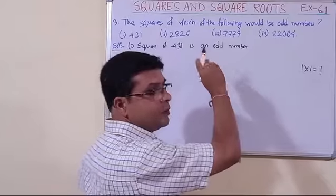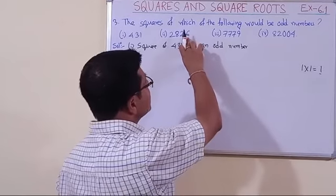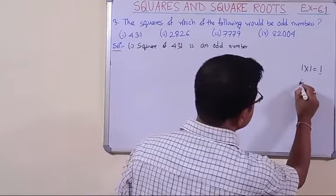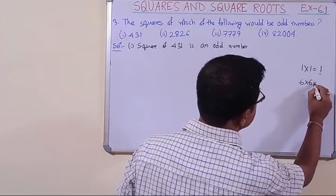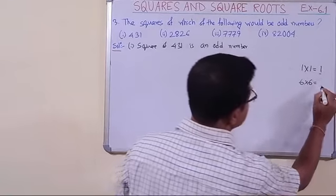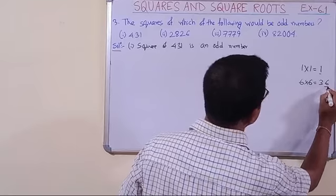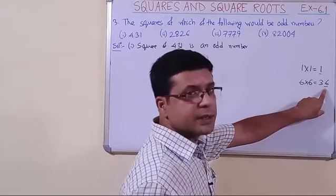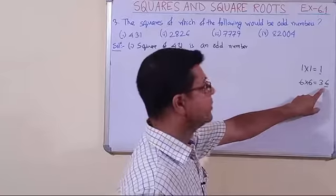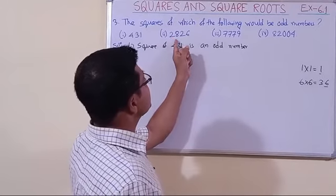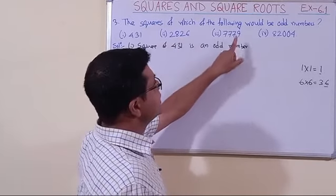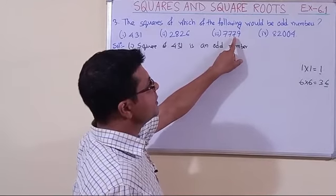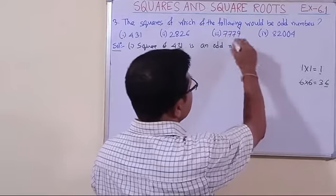The second number is 2826. To find whether its square is odd or even, we check the unit digit in the square. We multiply 6 into 6, which gives 36. So in the square of this number, the unit digit is 6, which is an even number. Therefore, the square of 2826 cannot be an odd number.